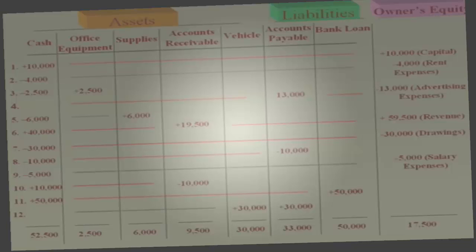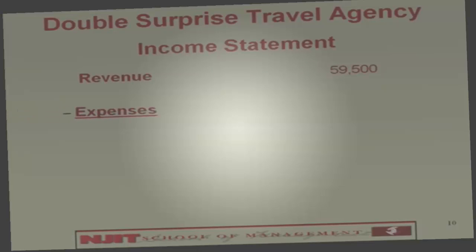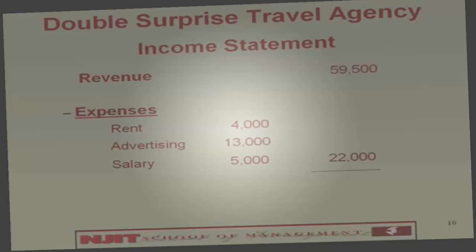Now let's do an income statement. An income statement has revenue and expense. From your spreadsheet, the revenue was $59,500. Then put in the expenses — look them up and write them down. Expenses total $22,000, so your profit is $37,500.